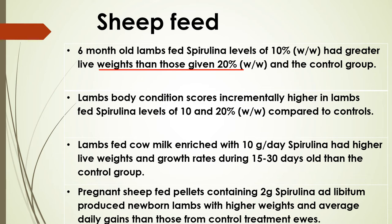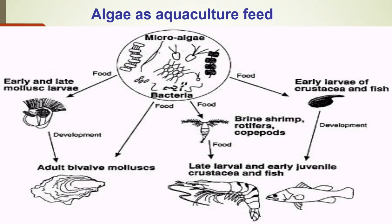In the case of sheep, when fed with spirulina, both body weight and muscle weight increased. In aquaculture feed, algae can be used for the cultivation of larvae of mollusks, adult bivalve mollusks, and larvae or early juvenile crustaceans and fishes.